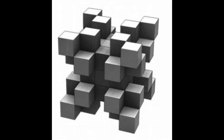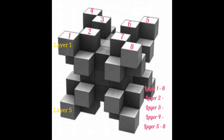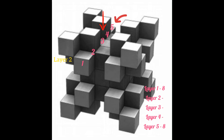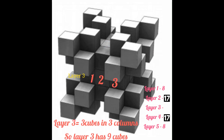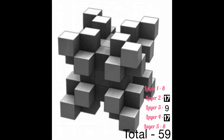Let's count the number of cubes in this solid, counting from layer 1. Layer 1 has 1, 2, 3, 4, 5, 6, 7, 8 — so 8 cubes in layer 1. As it is a symmetric solid, layer 1 and layer 5 each have 8 cubes. Layer 2 has 1, 2, 3, 4, 5 — and by symmetry the right side has another 5, giving 10, plus 11, 12, 13 in the middle, and 14, 15 on the right and 16, 17 on the left side. So there are 17 cubes in the second and fourth layers. The middle layer has 1, 2, 3 — and as there are 3 columns, 3 into 3 is 9 cubes in the middle layer. So the total is 59 cubes.